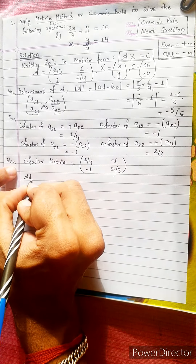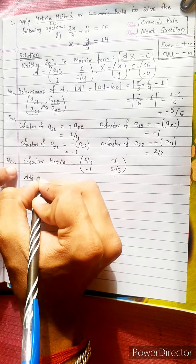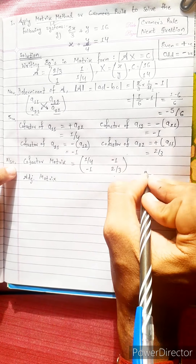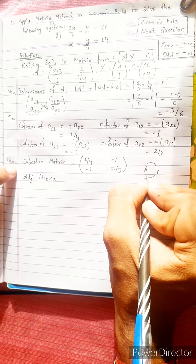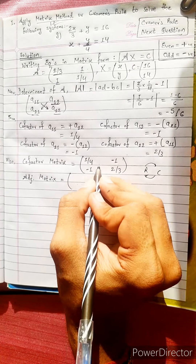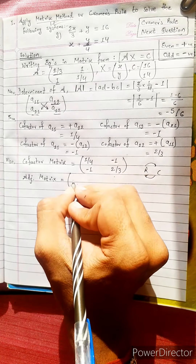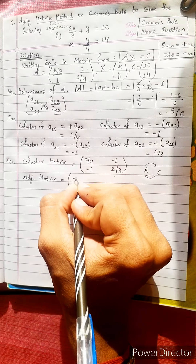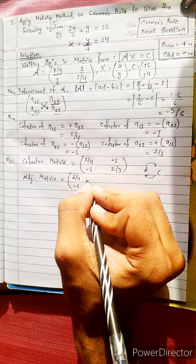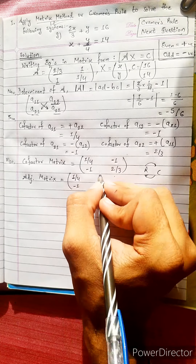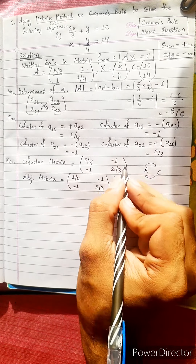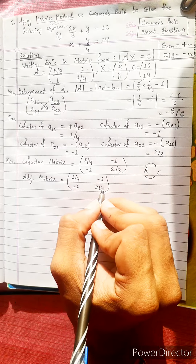The adjoint is the transpose of the cofactor matrix. To transpose, we exchange rows and columns. The first column becomes 1/4 and minus 1, and the remaining element minus 1 moves accordingly. This transpose is called the adjoint matrix.